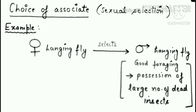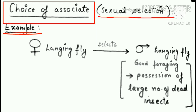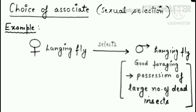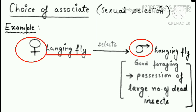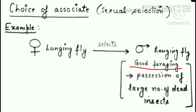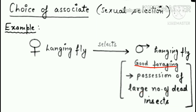An example of sexual selection is the choice of associate in the hanging fly. Here the female selects those males who are good foragers — foraging meaning hunting or the ability to capture prey. The more dead insects a male possesses, the greater his chances of being selected, because more dead insects signal better foraging ability. The female selects the male who offers the greater number of dead insects.